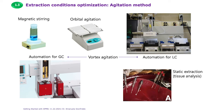Different agitation systems for SPME include the classical magnetic stirring plate, orbital agitation, and other types of automated agitation. Vortex agitation is often used with auto-samplers for both GC and LC analysis. There are situations in which we cannot agitate the sample, such as when performing tissue analysis in vivo. When static extraction takes place, we need to expect longer extraction times to achieve the desired sensitivity.